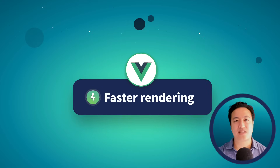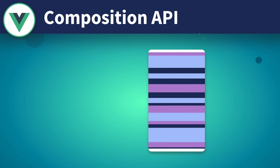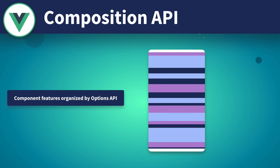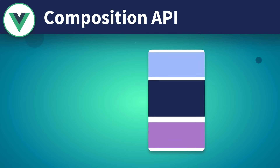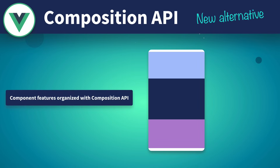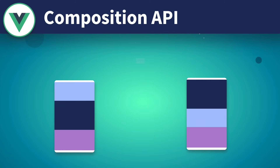One of the biggest features coming in Vue 3 is the new Composition API. With Vue 2, sometimes our large components ended up with features dispersed amongst the component's options, which could make them difficult to manage and maintain. With the Composition API, Vue 3 provides a new alternative syntax that gives developers a better way of managing features and functionality across their components, allowing you to easily scale your application.